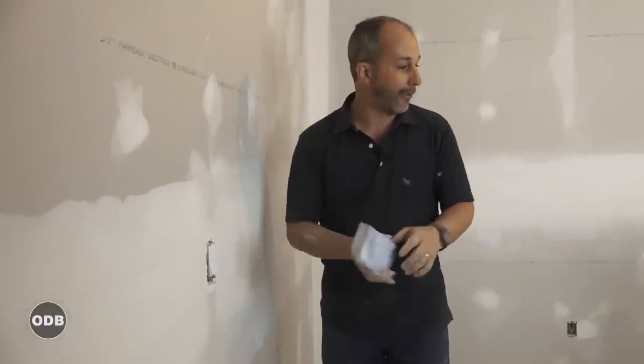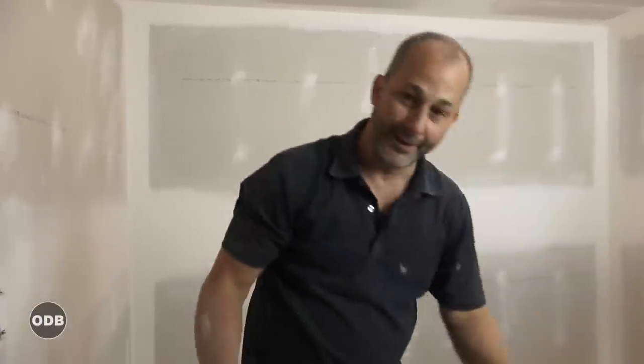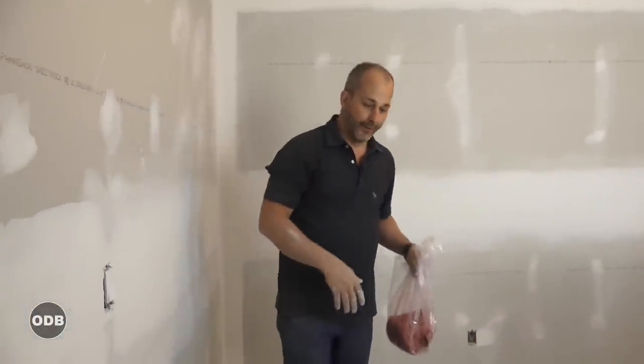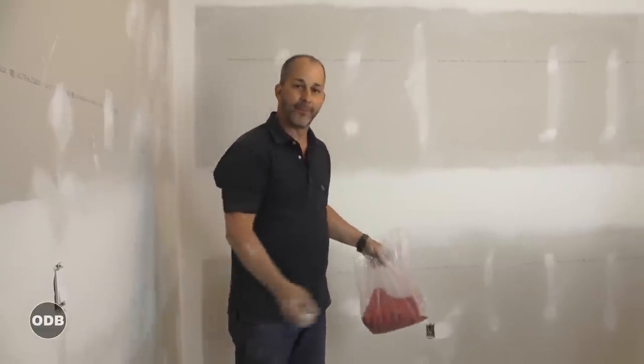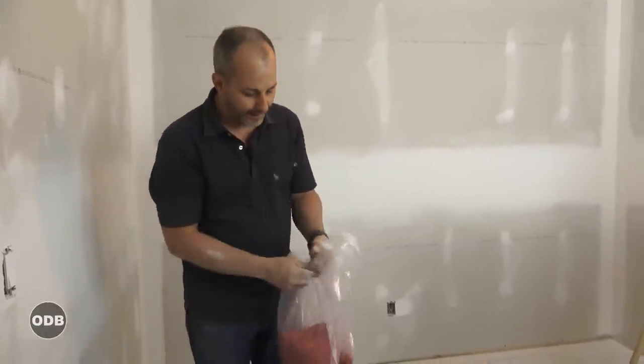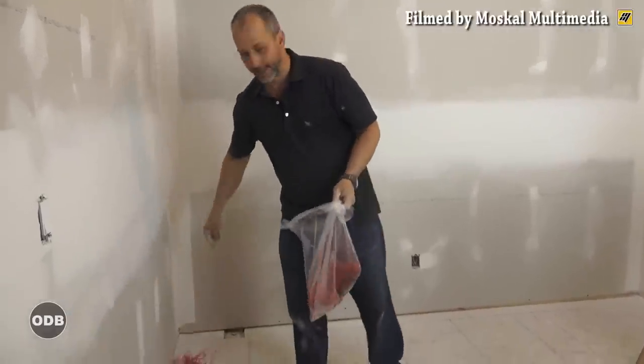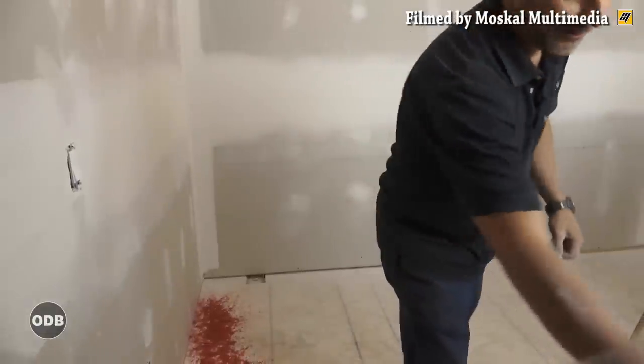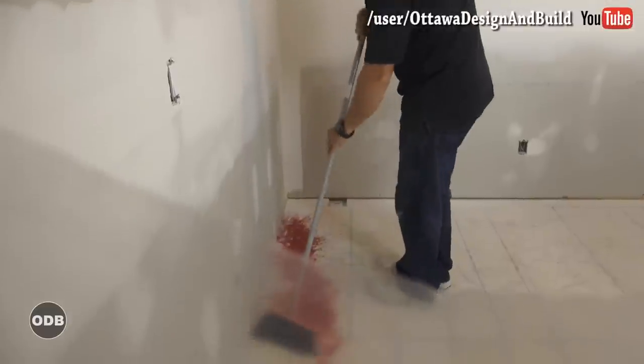The only other thing we need to know actually is when you're done sanding, how to clean up. You're in a small room. You can lay down a sheet of plastic. Most of the dust will land on the plastic. You gently pull the corners together, throw in a garbage bag when you're done.